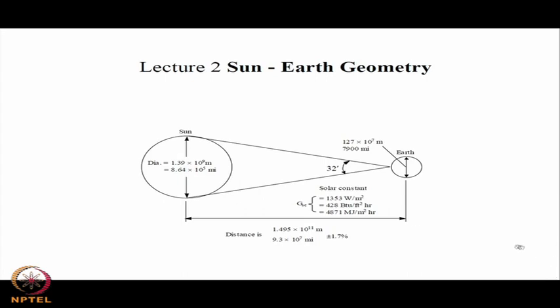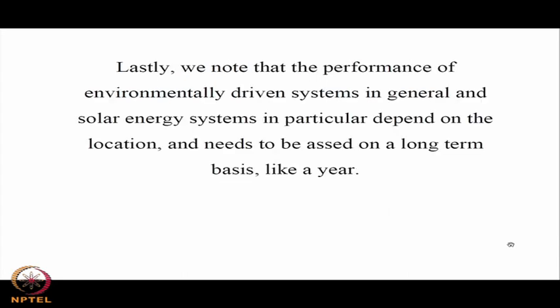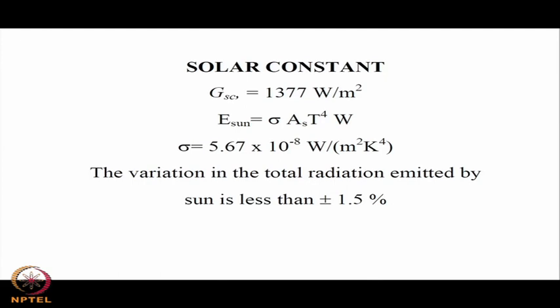There are various estimates ranging from 1353 to 1367 watts per meter square, as more and more satellite data becomes available. The solar constant got revised up to 1377 watts per meter square.